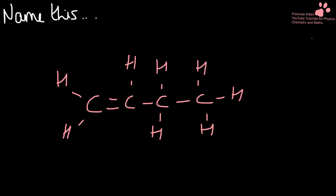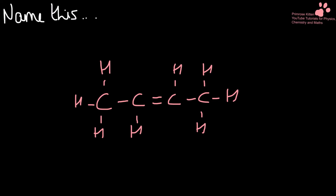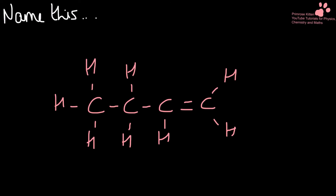Name this. Here we have four carbons — numbering them one, two, three, four — so this is going to be but-1-ene. Name this. Here again we have butene, but numbering one, two, three, four, the double bond has moved, making it but-2-ene. Name this. So this is but-1-ene again — numbering one, two, three, four so that our functional group has the lowest number.